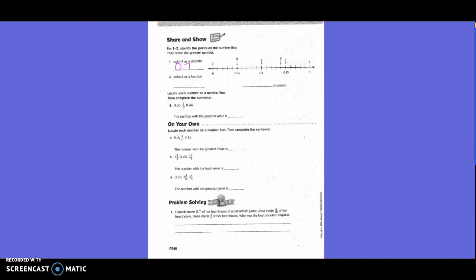Point B as a fraction. We know that 25 hundredths could also be written as 1 fourth as a fraction. Or 25 hundredths, which in simplest form would be 1 fourth. So which one is greater, 7 tenths or 1 fourth? 7 tenths is greater.